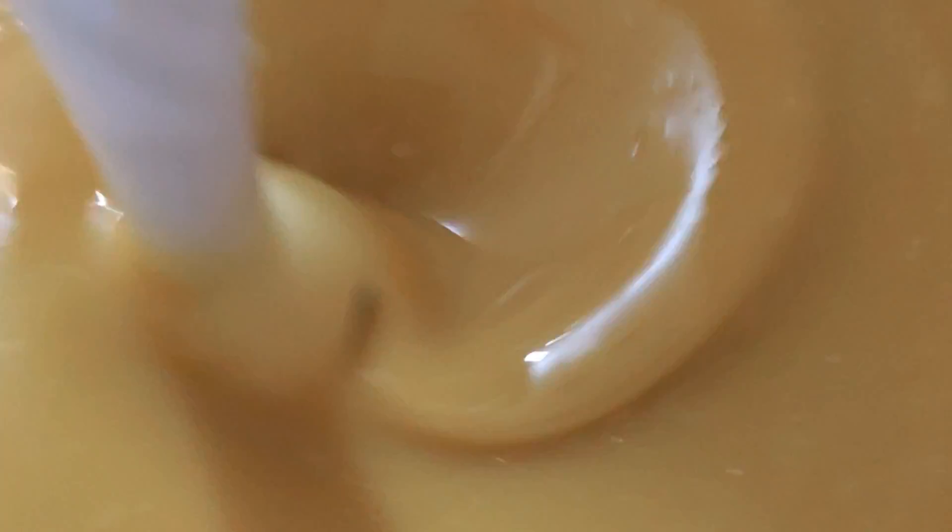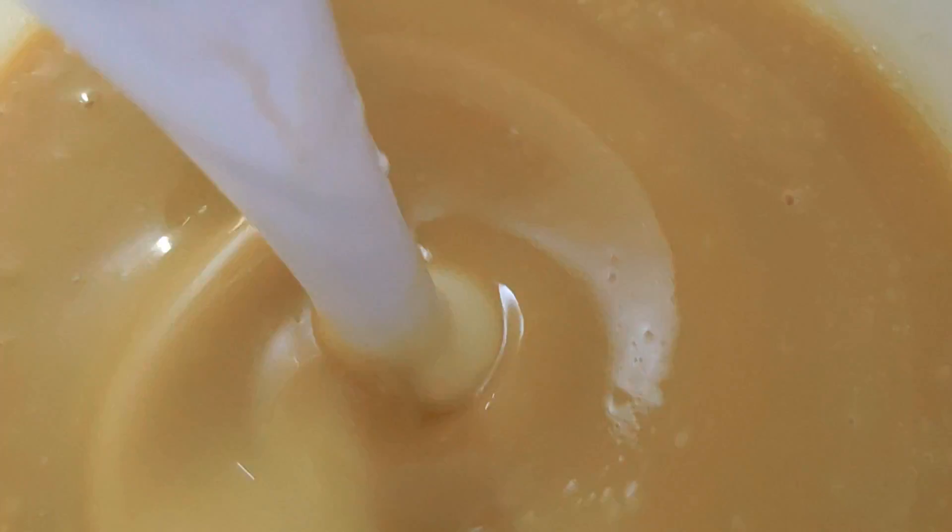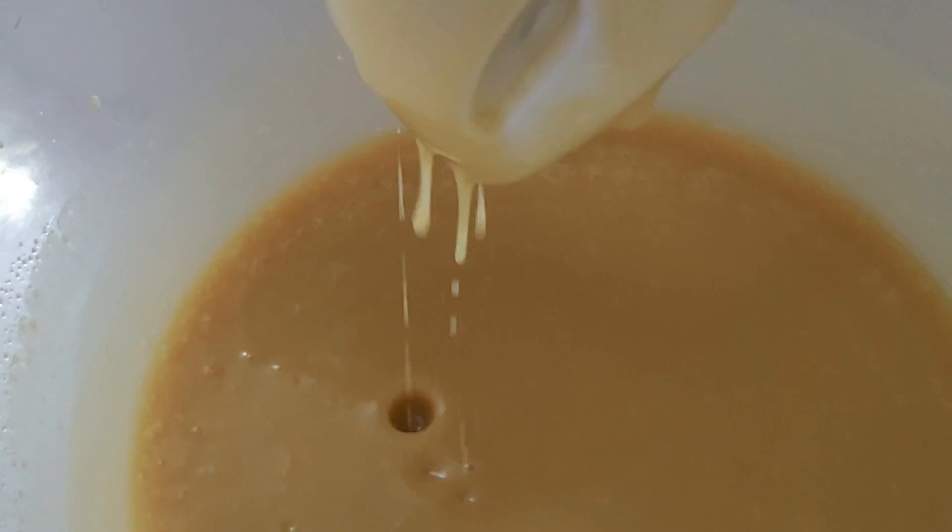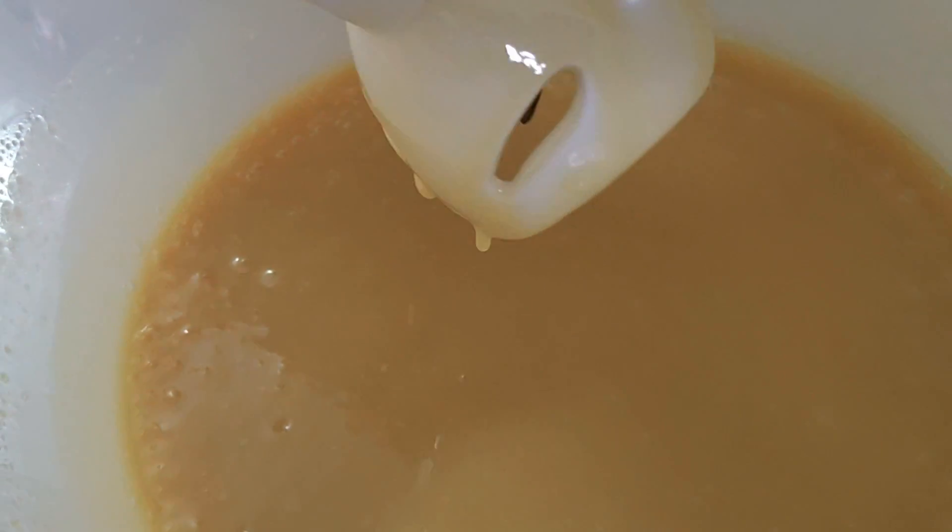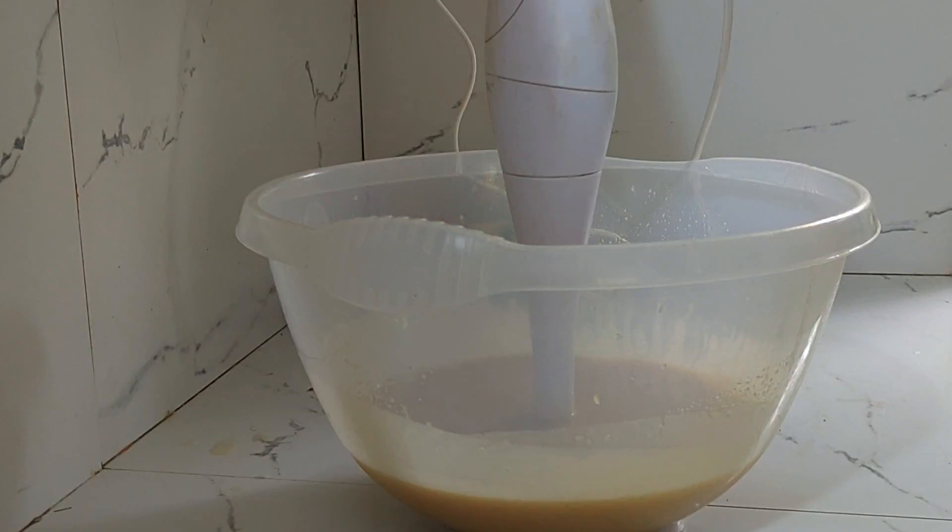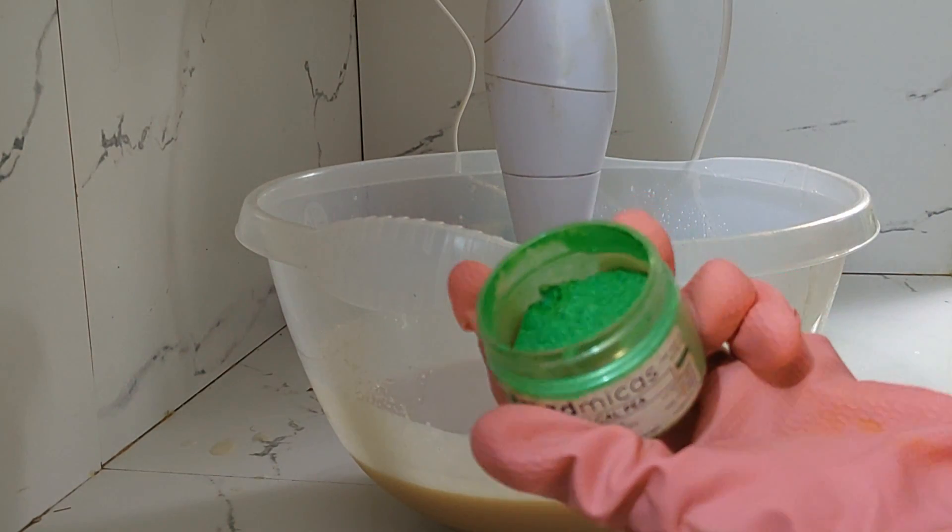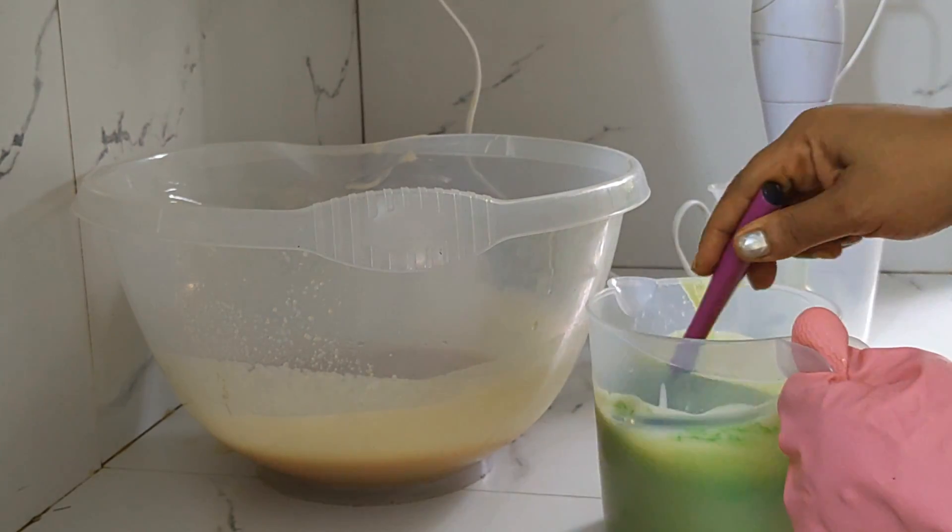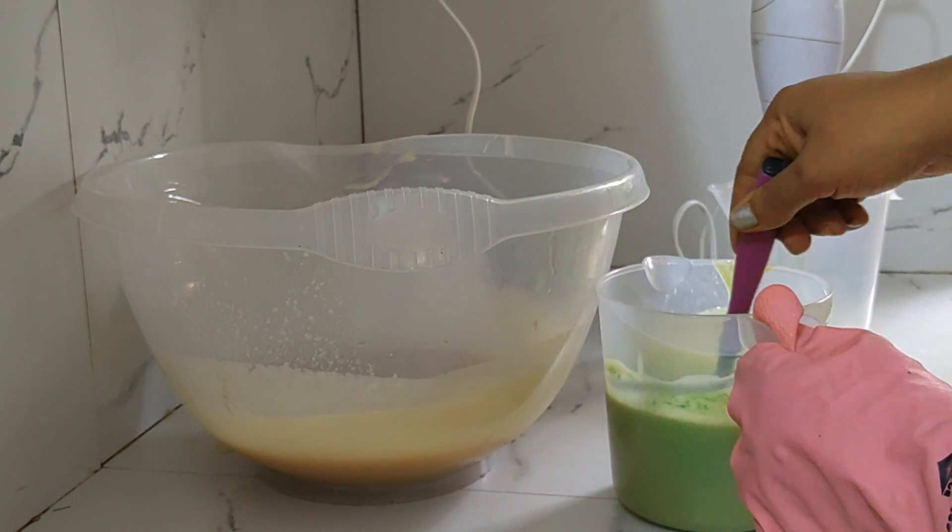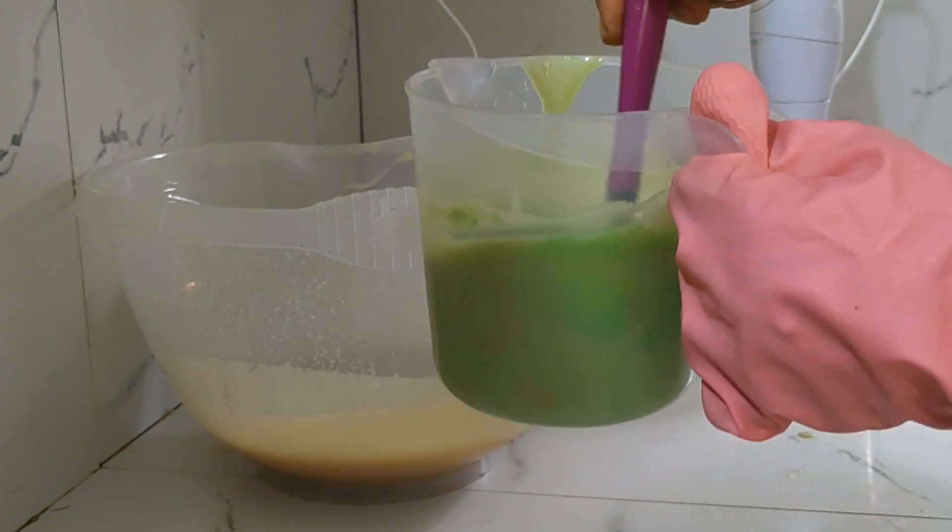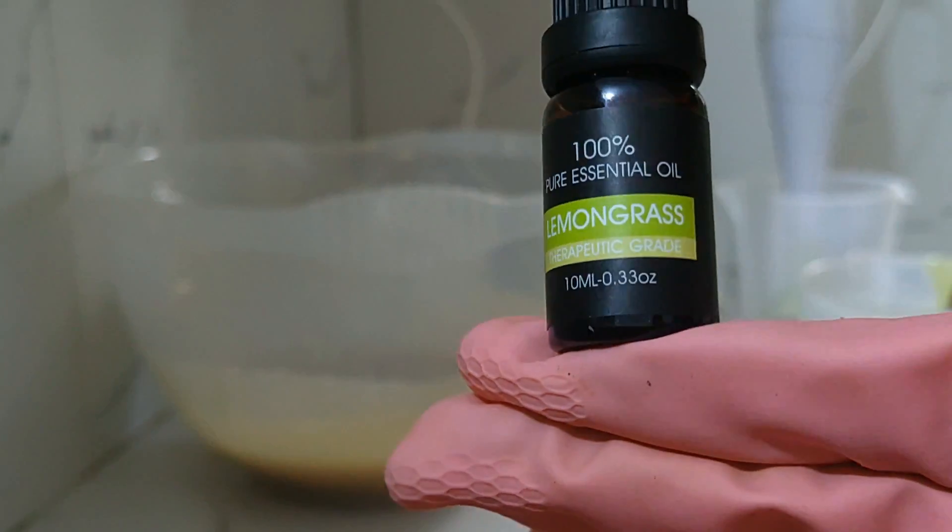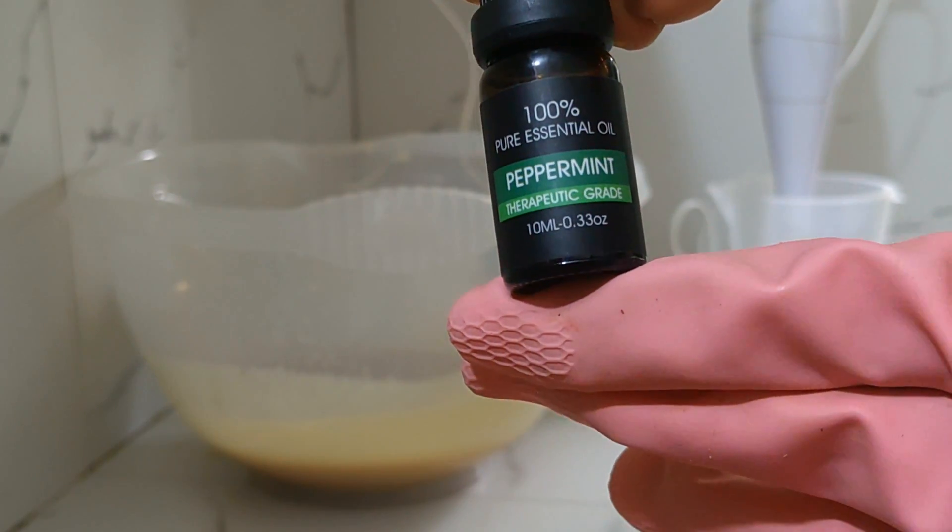Once we're sure our soap is well mixed and at trace we can then begin to add our colors, our fragrances, essential oils, additives, whatever you want to add. So I'm going to be adding some green color to the soap. I just poured out half of the content and am adding our green color to it, first to test the color and see how it's going to turn out. Then I'm going to add some lemongrass essential oil as well as some peppermint essential oil.